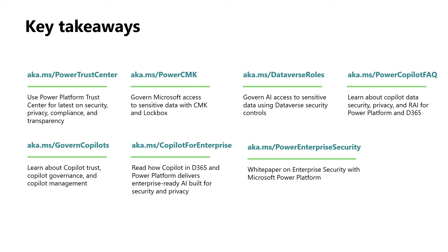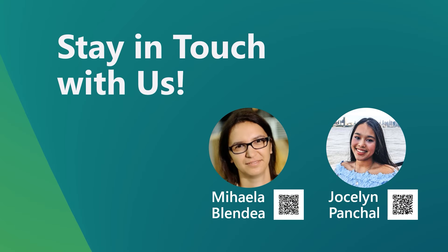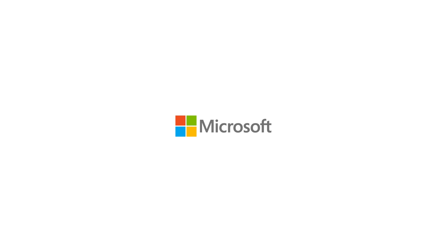As we conclude this session, keep in mind the importance of capabilities such as CMK and Lockbox to ensure optimal compliance with your region and organization's standards, and stay up-to-date by visiting the Power Platform Trust Center. As you start adopting more AI capabilities with Power Platform, visit some of these resources to learn more about the enterprise-grade co-pilot security measures, and be sure to check out the published white paper for a comprehensive, detailed overview of Power Platform security. We hope you implement these security strategies in your organization. Thank you for watching.